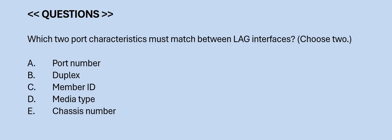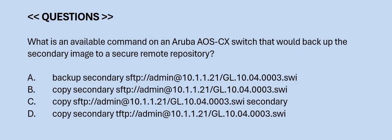Next question: Which two port characteristics must match between LAG interfaces? Choose two. Option A: port number. Option B: duplex. Option C: member ID. Option D: media type. Option E: chassis number. The correct answers are Option B and D.